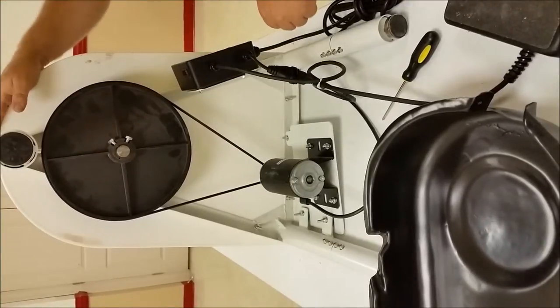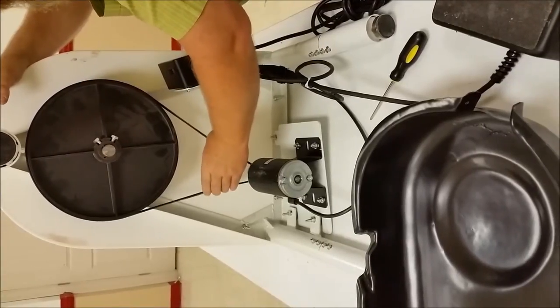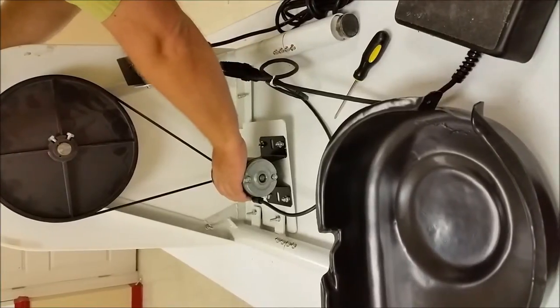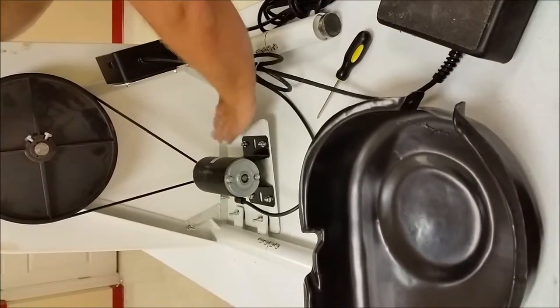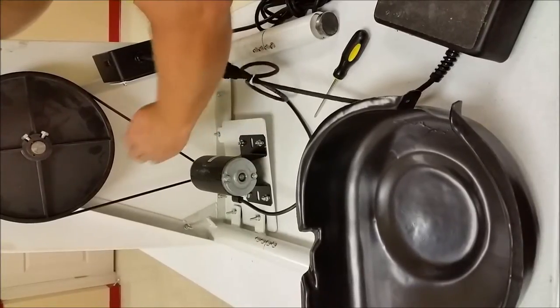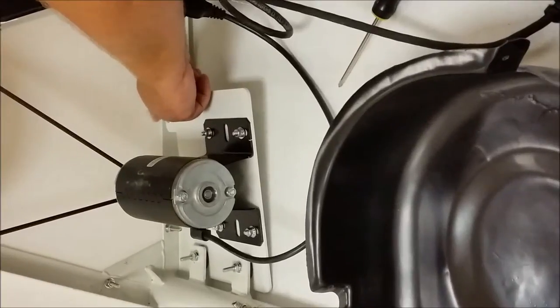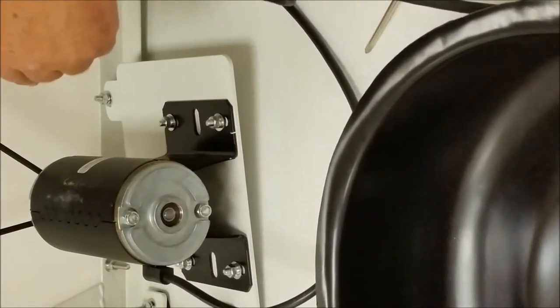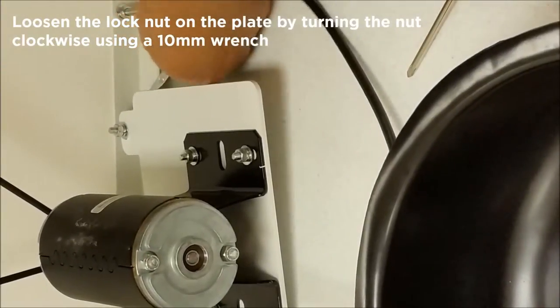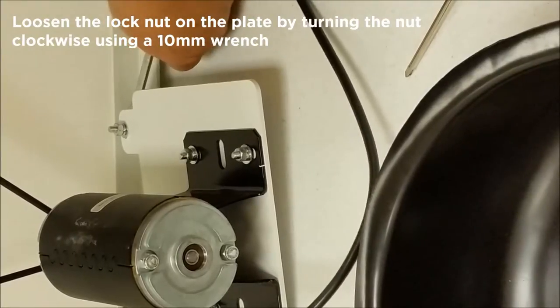To adjust the tension on the belt, I want to tighten this up just a little bit. The motor is mounted on a plate that can be adjusted forward or backward with this nut and bolt. To tighten the belt, I need to loosen the lock nut on the bottom.